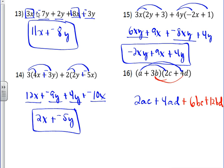Add like terms? It turns out there are no terms to add, and so that's your final answer: 2ac plus 4ad plus 6bc plus 12bd.